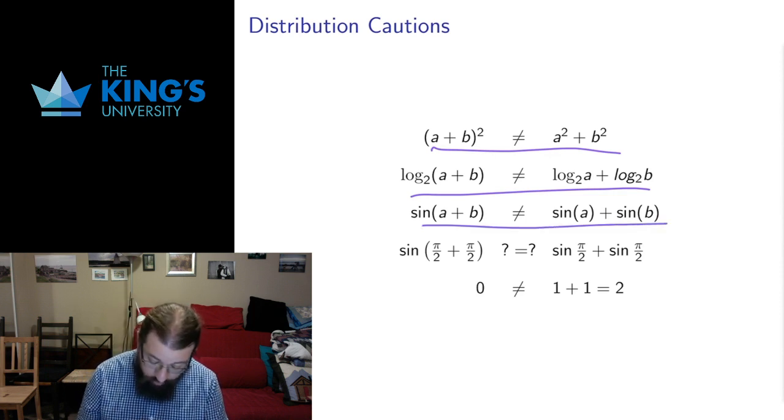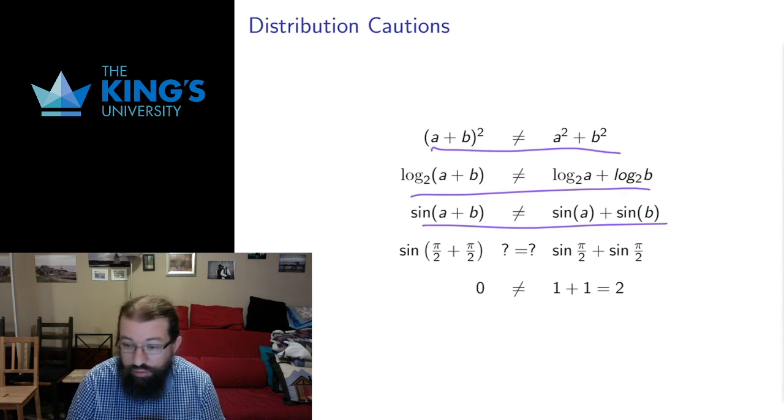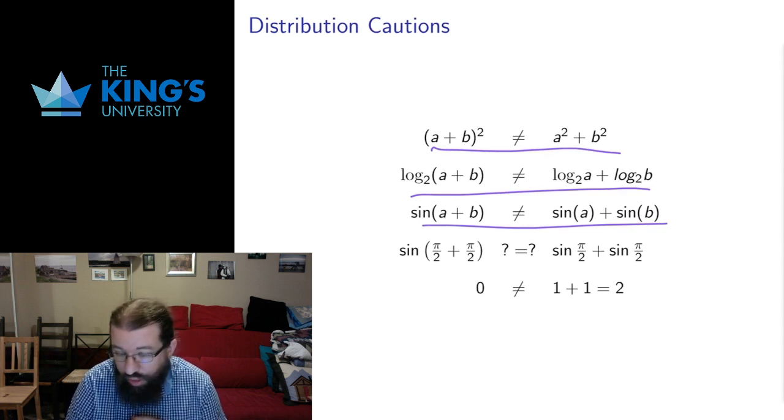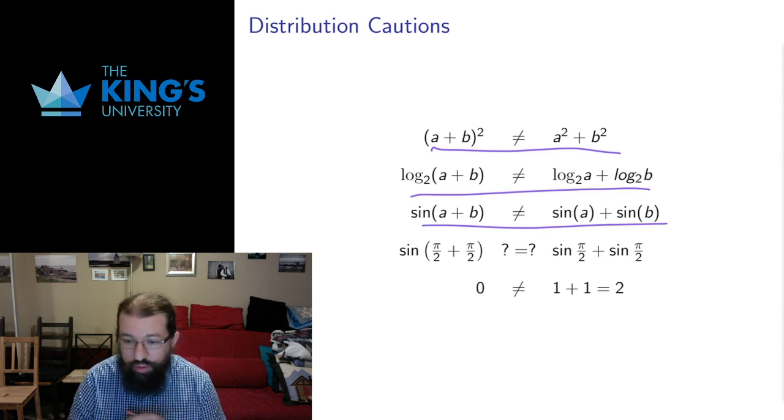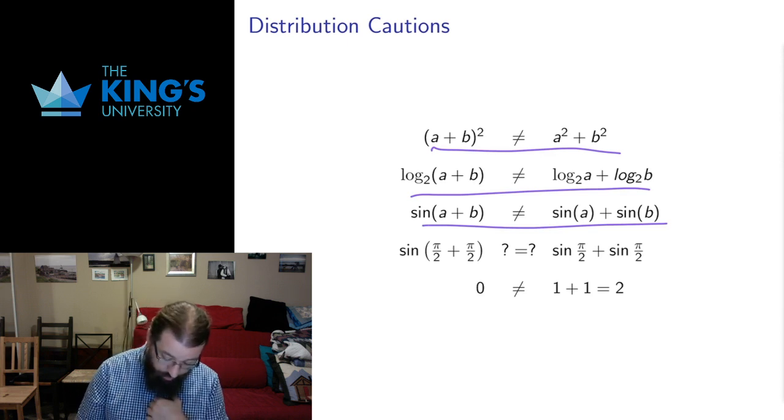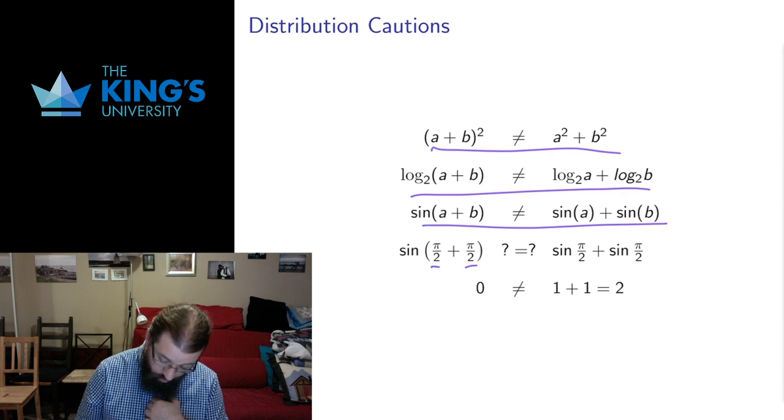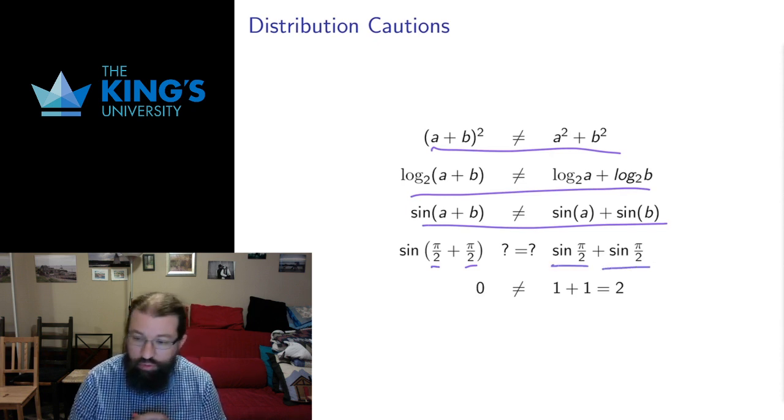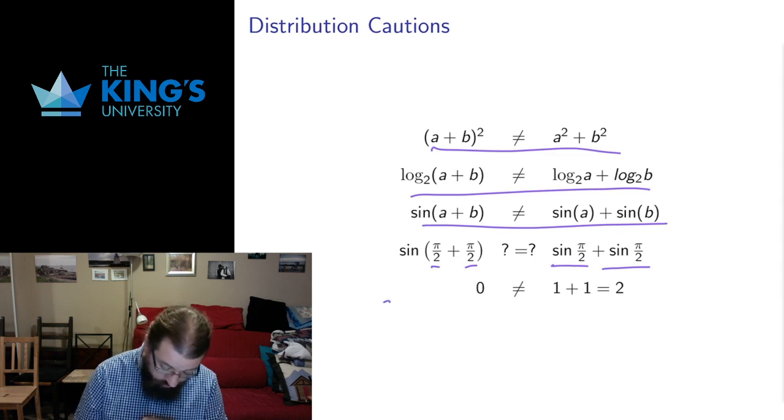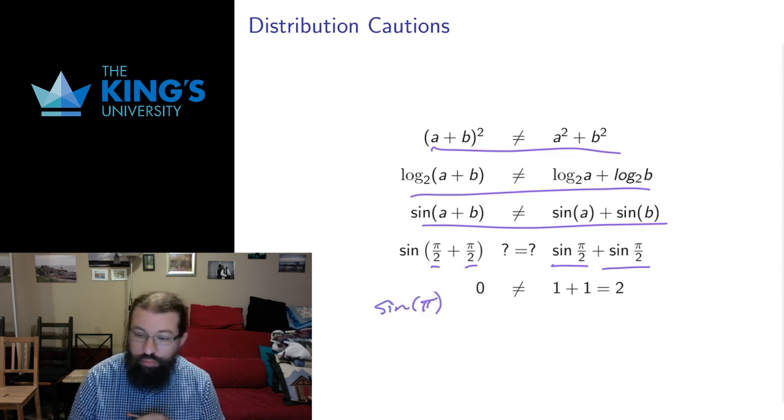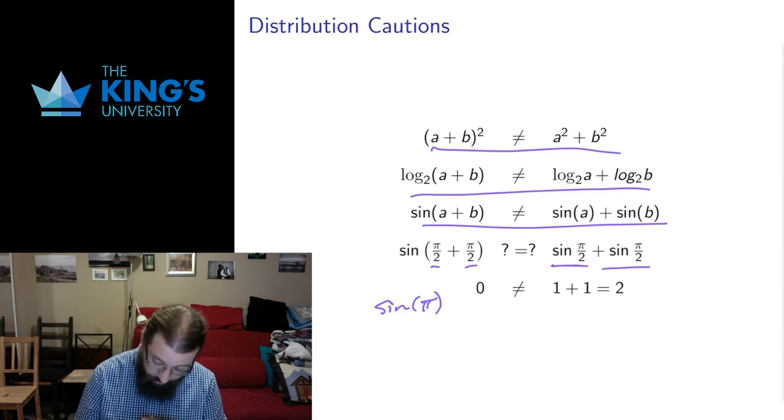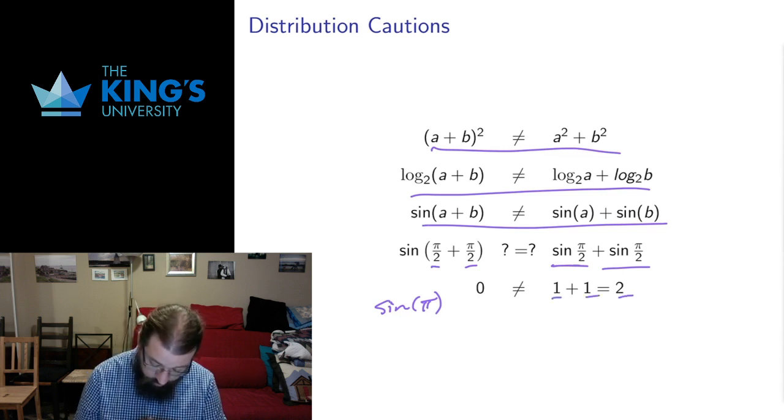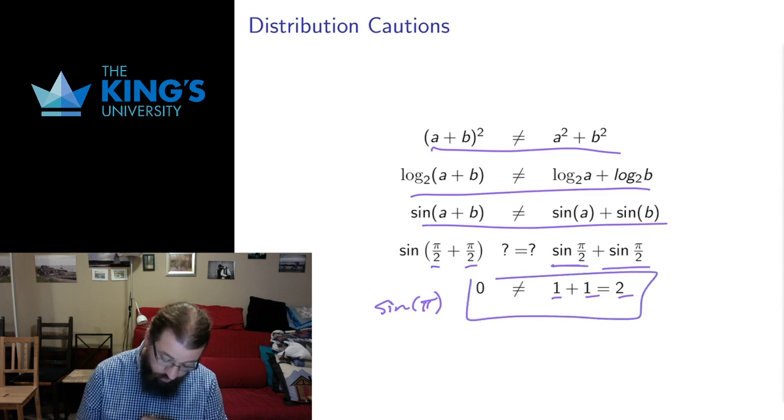And we can check this one if you wish by using radians here instead of degrees. If I put in pi over 2 plus pi over 2, well, if I split this up, if I were able to split this up, I would get sine of pi over 2 plus sine of pi over 2. On this side, I get sine of pi. Pi over 2 plus pi over 2 is pi. Sine of pi is 0. On this side, sine of pi over 2 is 1. I would get 1 plus 1 is 2. 2 is not equal to 0. So again, this thing that you might want to try to do doesn't work.